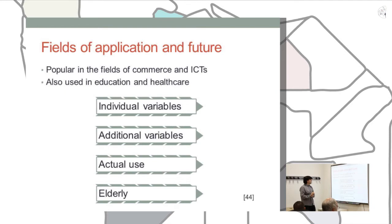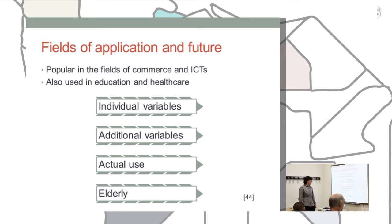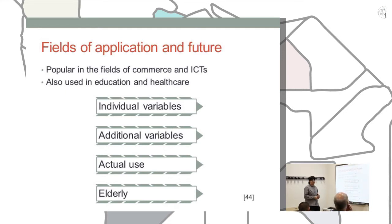This model is popular in the fields of commerce and ICT, and is starting to be used in other fields like education and healthcare. The main future research lines for this model are: the study of individual variables, the addition of variables from other models, the study of actual use and how to measure it more efficiently, and the real relationship between actual use and behavioral intention, as well as the application of the TAM model in learning contexts.